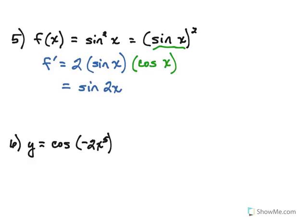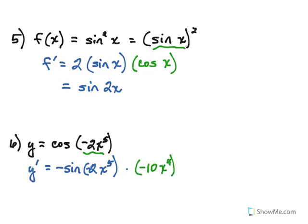For number 6, another trig form. This is a great example of a composite function: the inside function being negative 2x to the 5th, the outside function being cosine. We start by taking the derivative of the cosine part, which is negative sine. Remember, we take only one derivative at a time, so we leave it as negative 2x to the 5th. Now multiply by the derivative of negative 2x to the 5th, which is negative 10x to the 4th. We have a negative times a negative, so that makes positive. Putting 10x to the 4th in front gives us positive 10x to the 4th times sine of negative 2x to the 5th.